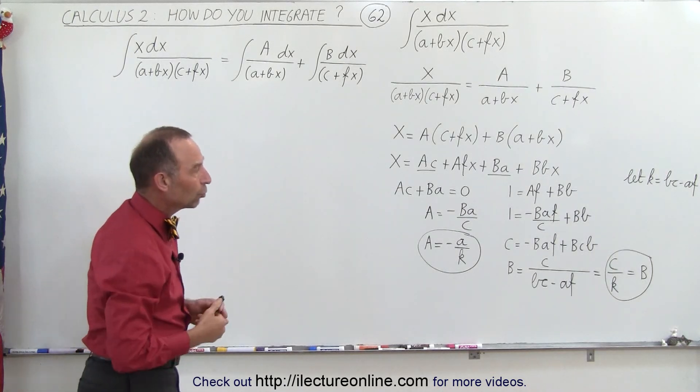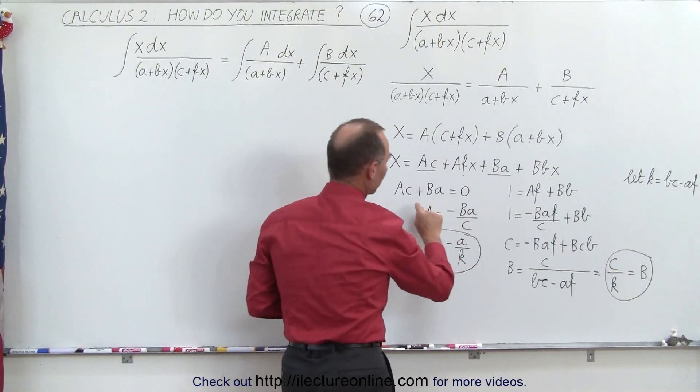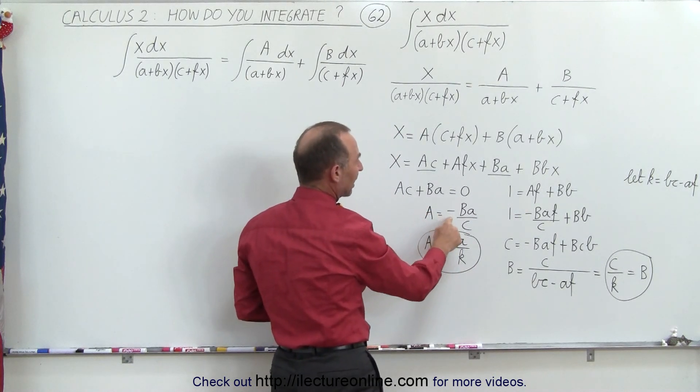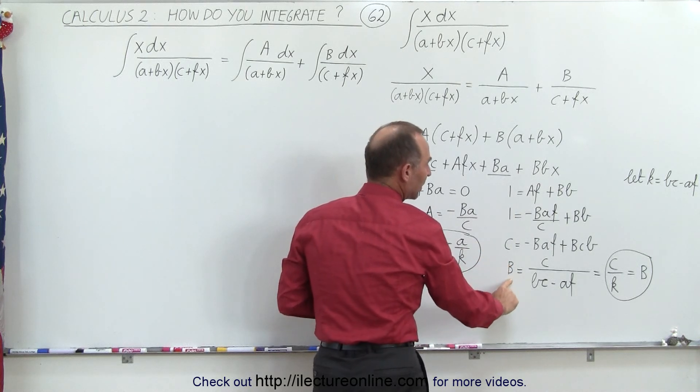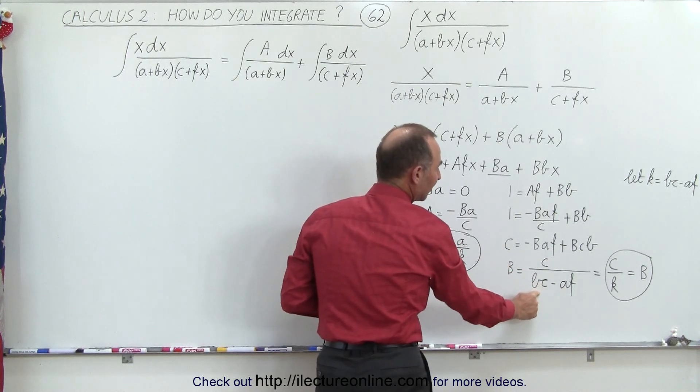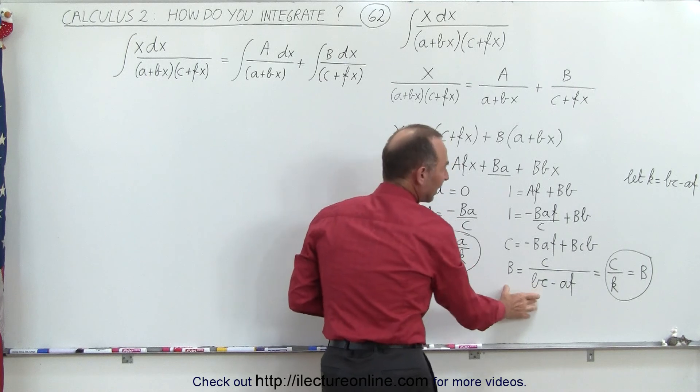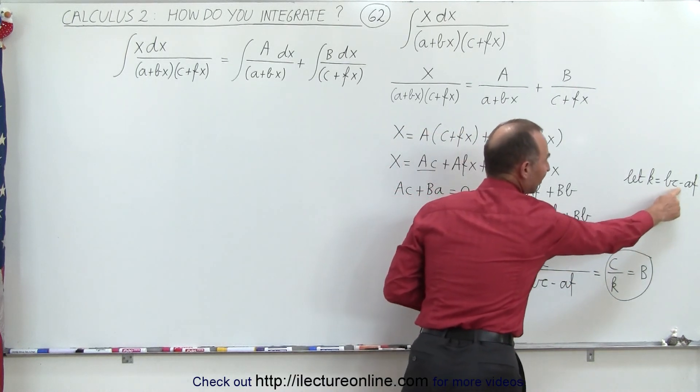And then we have to solve those two simultaneously. So here we can see that A is equal to minus Ba over c. Then here using this equation, we realize then B is equal to c divided by bc minus af. If we let k equals bc minus af, we can write B in a very simplified term.